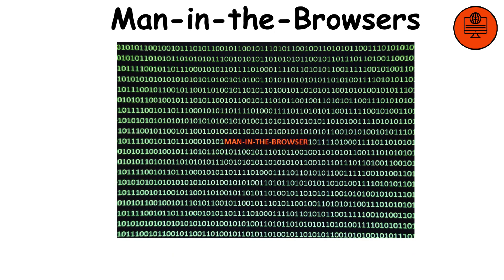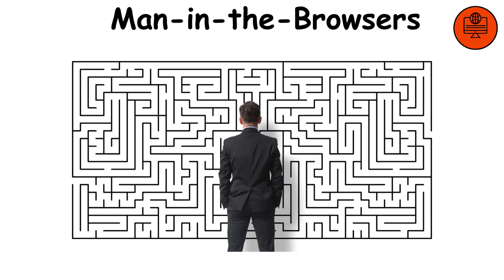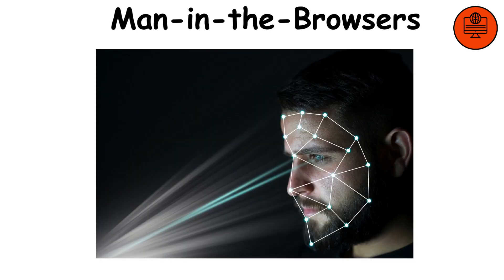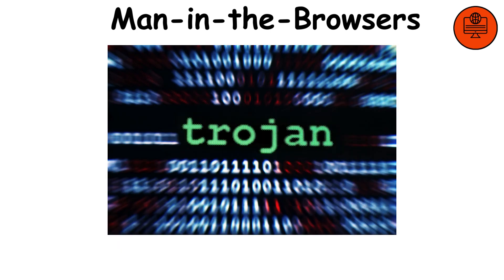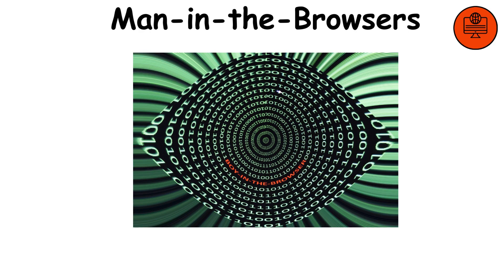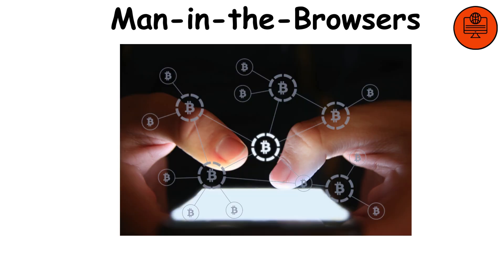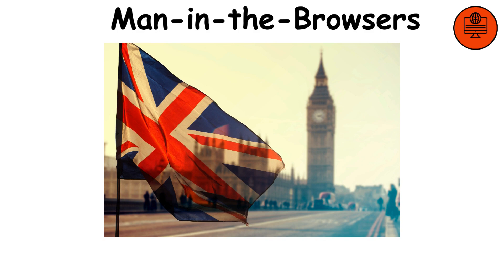Because MITB attacks happen on the client-side and are difficult to detect, they frequently elude detection by conventional security measures. For instance, the Zeus Trojan carried out a complex man-in-the-browser (MITB) attack in 2010 to intercept internet banking transactions and steal more than $1 million from a UK company.